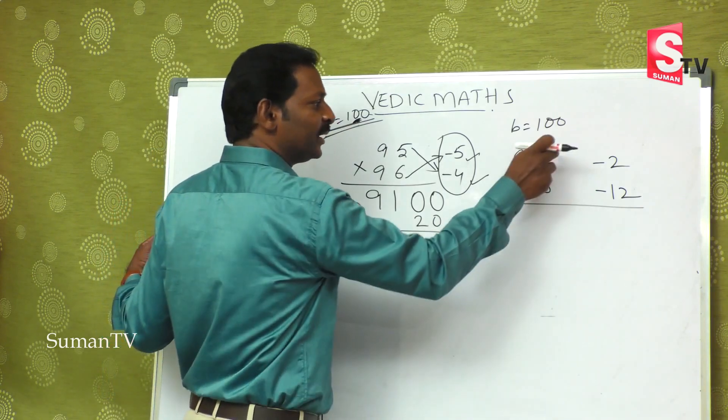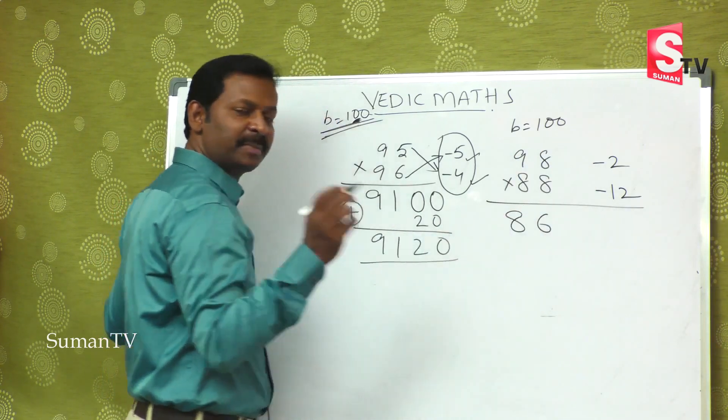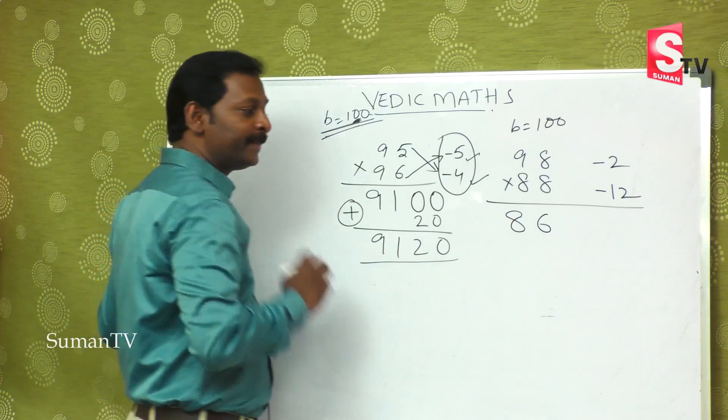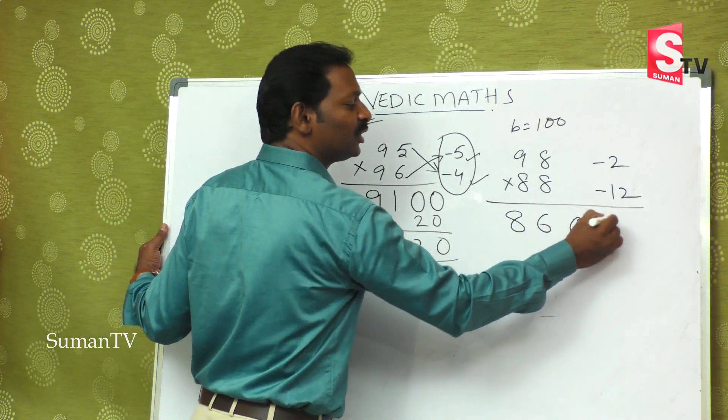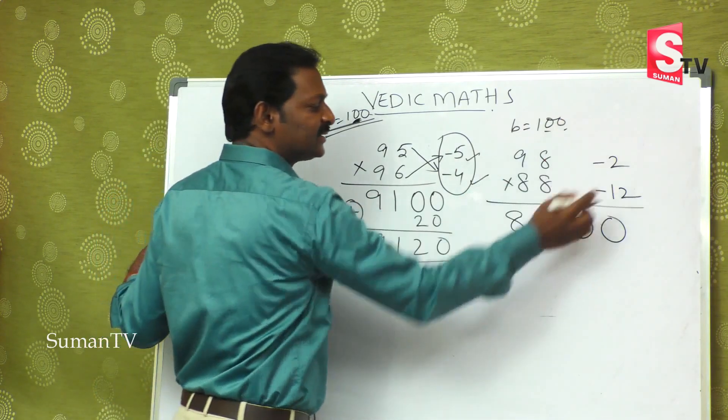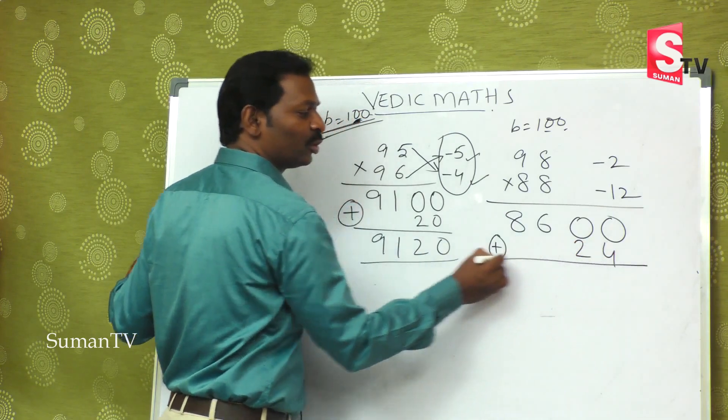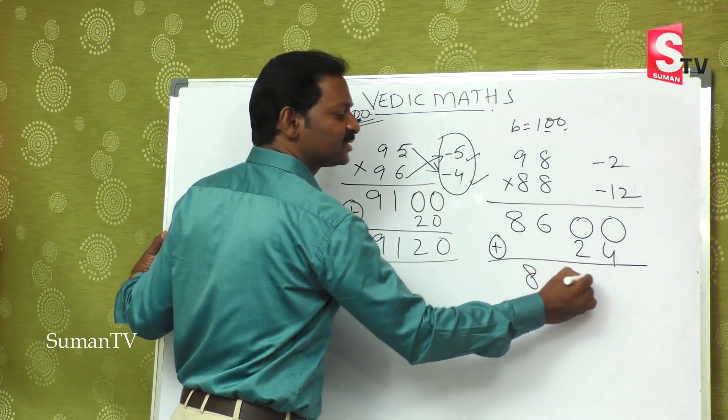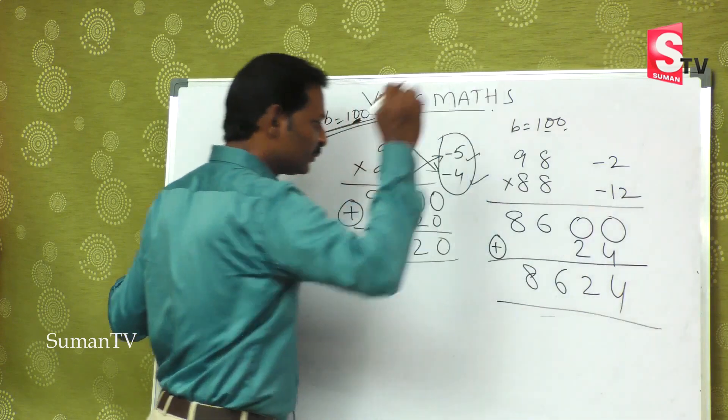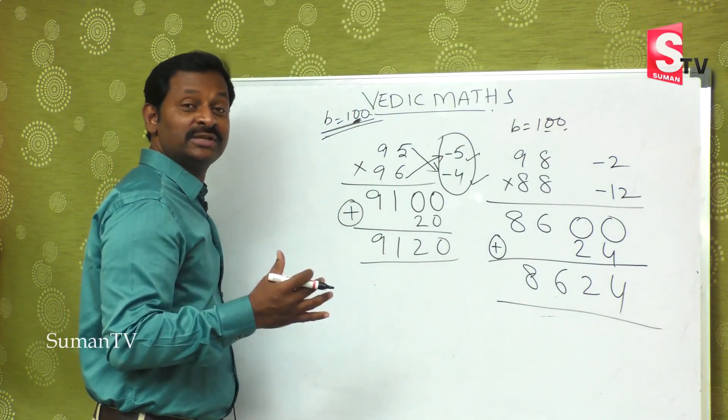If you go to 88 minus 2 is 86, no doubt. 98 minus 12 is also 86. First part of the answer is over. The first part of the answer is 2. Minus into minus is plus, and 12 × 2 is 24. So 8624 is available.